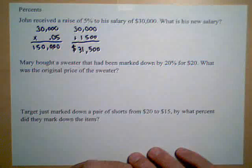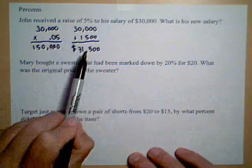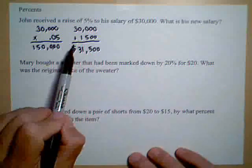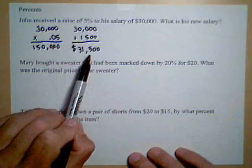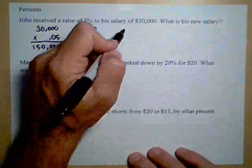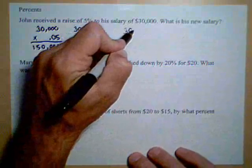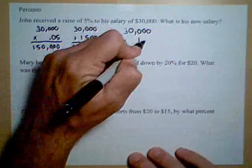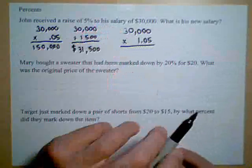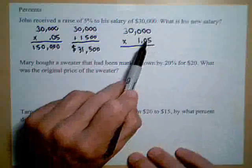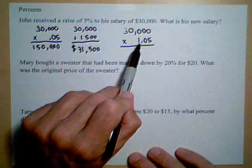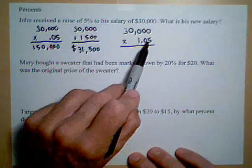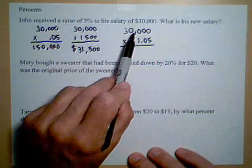Now we could have done this in one step. The reason being, $31,500, it's 5% more than his last salary, but it's 105% of his old salary. So what we can do to skip that two-step process is take the $30,000 and multiply it by 1.05. The .05 represents the 5% raise, and the 1 represents the 100% of his original salary. So we're going to find 105% of his original salary.